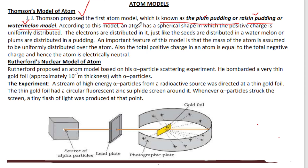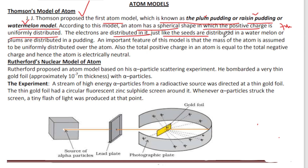J.J. Thomson proposed the first atom model in which charge is uniformly distributed. The atom is a spherical shape in which the positive charge is uniformly distributed. Positive charge refers to protons. The electrons are distributed in it just like seeds are distributed in a watermelon, or plums are distributed in a pudding.